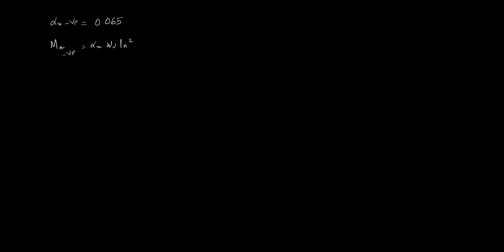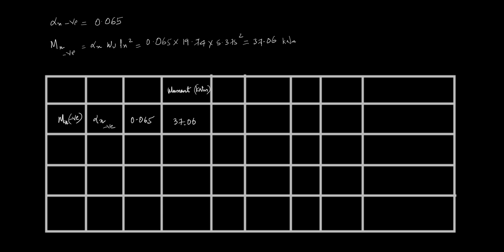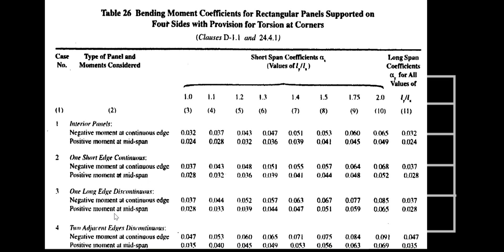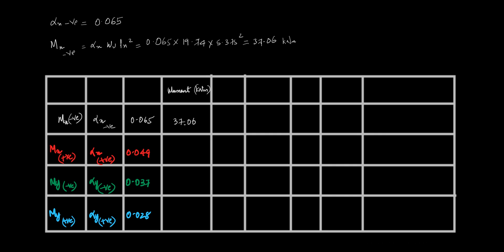MX negative equals alpha X negative into W into LX squared, giving 37.06 kilo Newton meter. Similarly, doing linear interpolation for alpha X positive, alpha Y negative, and alpha Y positive from the table, I get the corresponding moments as: MX positive = 27, MY negative = 21, and MY positive = 15.96 kilo Newton meter.